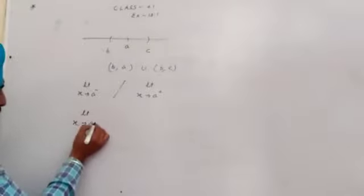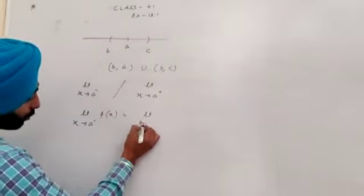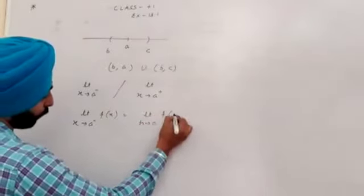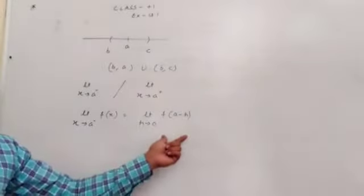Limit X approaches to A negative f(x) is equal to limit h approaches to zero f of (a minus h). So this way you can solve.